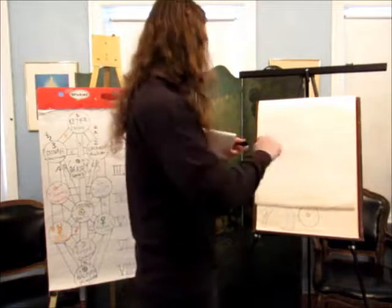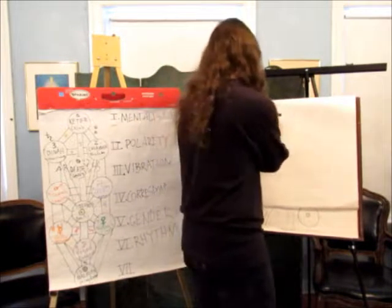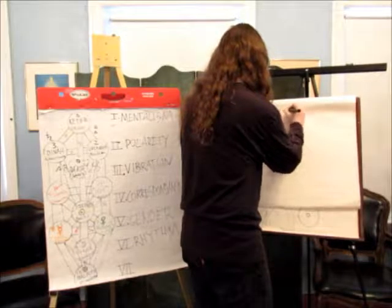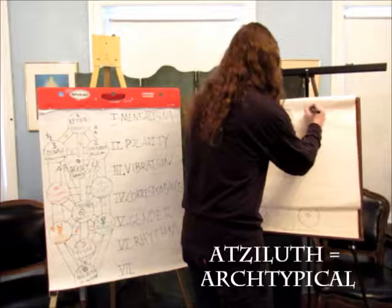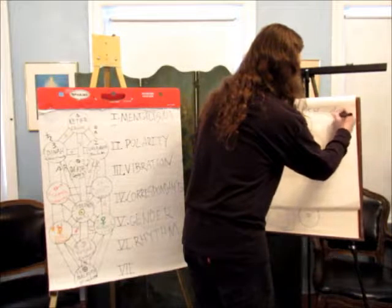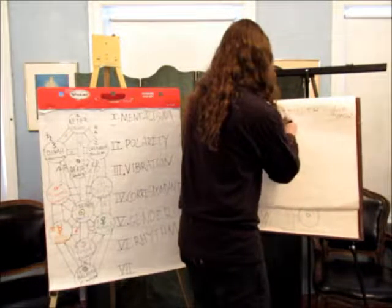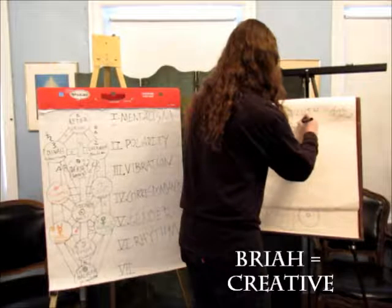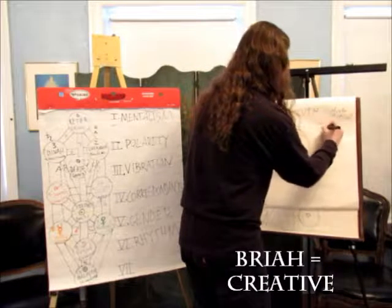The four worlds are: Atziluth, which is the archetypal; Briah, which is the creative; Yetzirah, which is the formative.